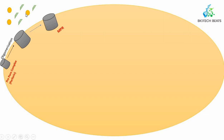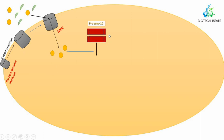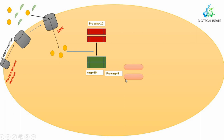The oligomerized prepore complex contains the mannose-6-phosphate receptor (M6PR), making it selectively permeable. Granzymes that carry the mannose-6-phosphate tag can enter the cell to perform their reaction. Granzyme B enters the target cell, where it encounters procaspase-10 in the cancer or virus-infected cell, and activates procaspase-10 to caspase-10.